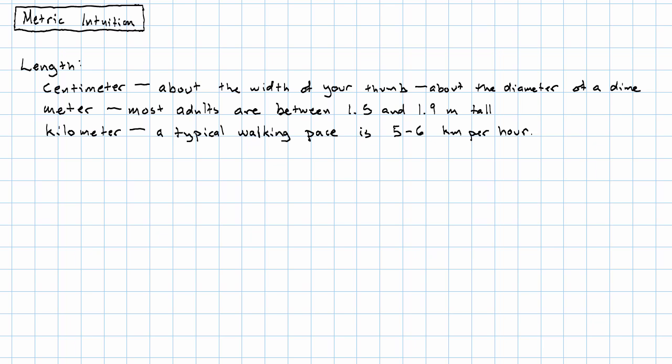A typical person's walking pace is between five and six kilometers per hour. Highway driving speeds are from about 90 to 110 kilometers per hour. So, there's a frame of reference for length.